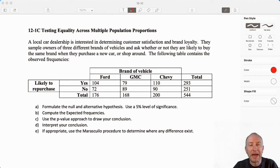Hello everybody and welcome back. So now we're into our third example of how to test for equality across multiple population proportions.